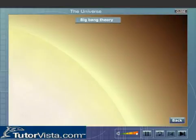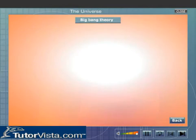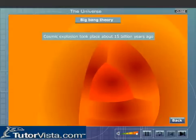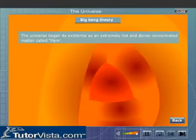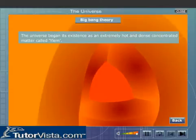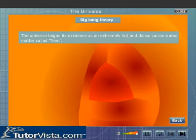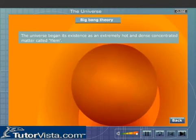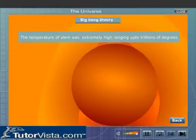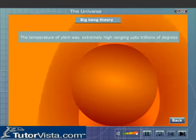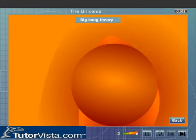Big Bang Theory. The Big Bang Theory states that the cosmic explosion took place about 15 billion years ago. According to Big Bang cosmologists, the Universe began its existence as an extremely hot and dense concentrated matter called Ilum. The temperature of Ilum was extremely high, ranging up to trillions of degrees. Around 15 billion years ago,